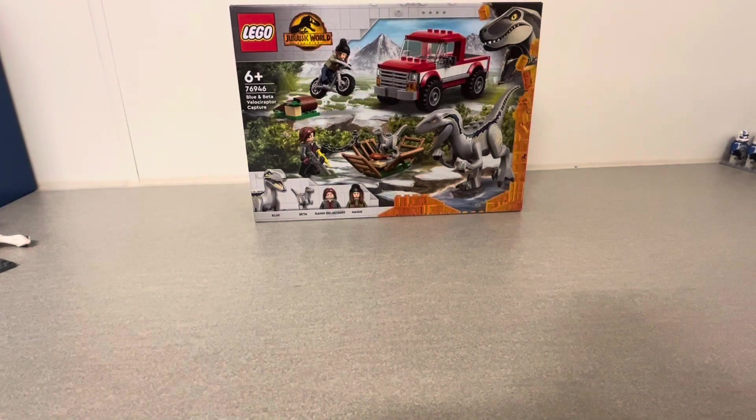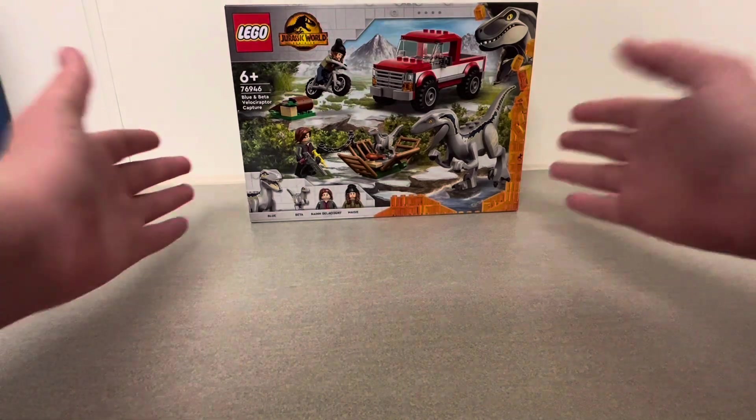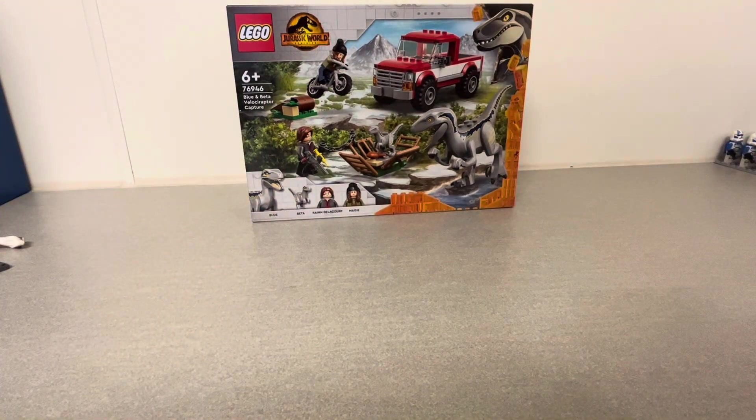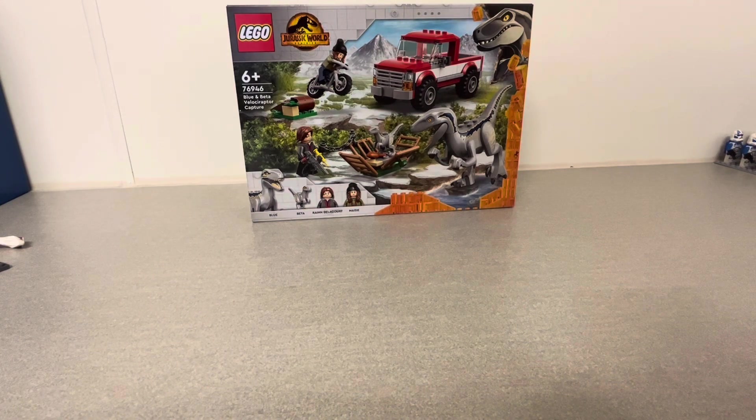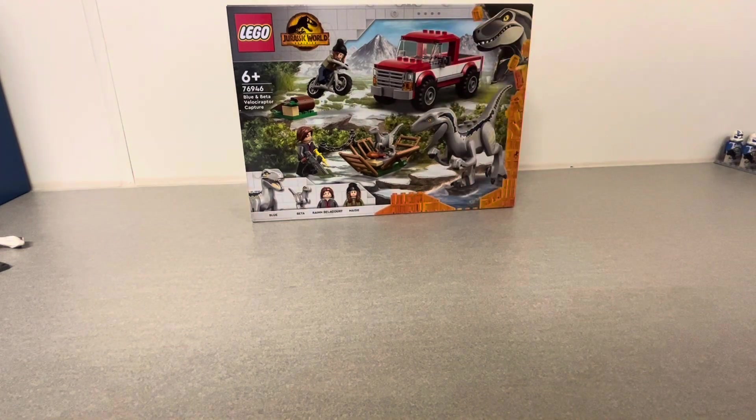Hi guys, welcome to a new review on the Sith Studs channel. Today we have the set 76946, the Jurassic World Blue and Beta Velociraptor Capture. There is Blue, Beta, Rain Delacorte and Maisie.